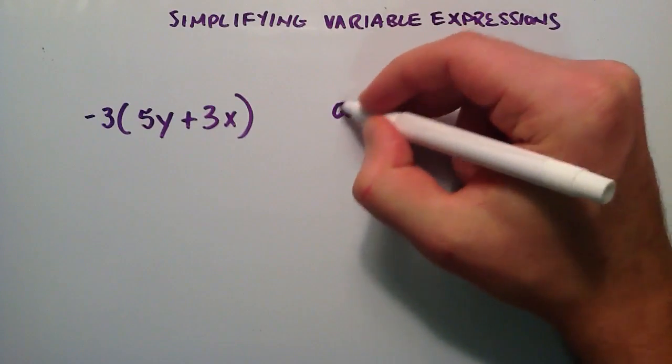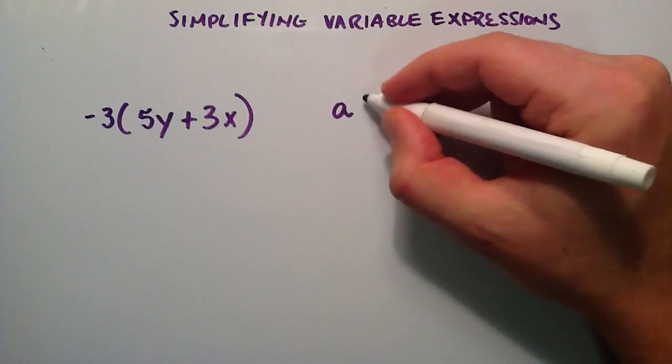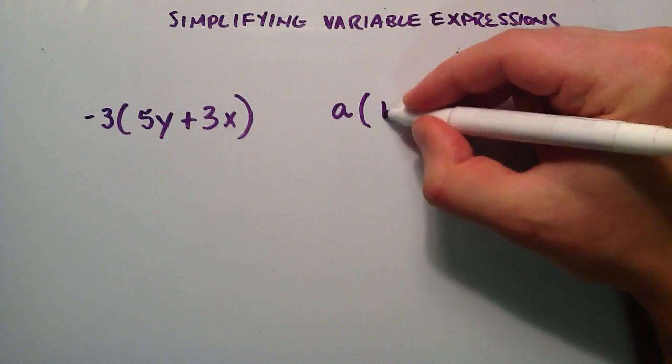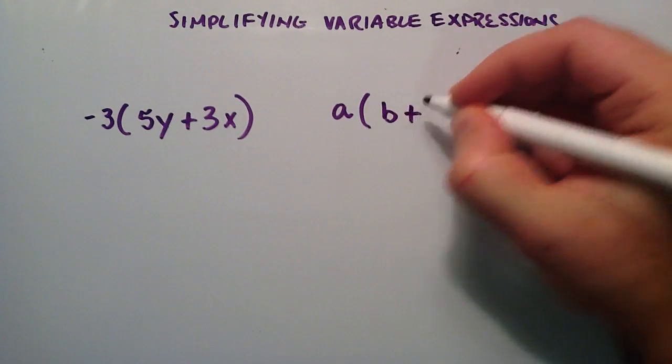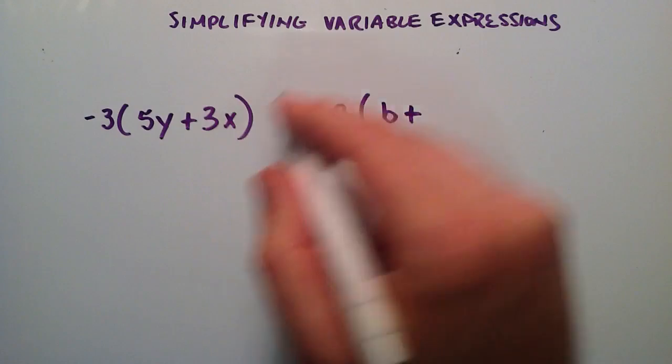So we have some number A, in this case it's our negative 3, and then that's multiplied by B, which our B in this case is 5Y, and then adding that to our C, which is 3X.